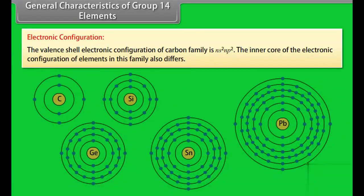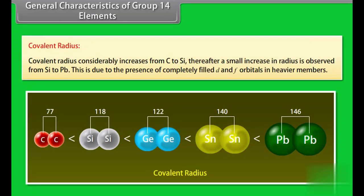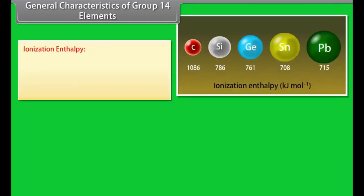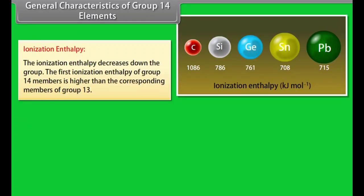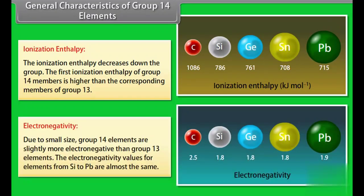General characteristics of group 14 elements. Electronic configuration: the valency shell electronic configuration of carbon family is NS2NP2. The inner core of the electronic configuration of elements in this family also differs. Covalent radius: covalent radius considerably increases from carbon to silicon. Thereafter, a small increase in radius is observed from silicon to lead. This is due to the presence of completely filled D and F orbitals in heavier members. Ionization enthalpy: the ionization enthalpy decreases down the group. The first ionization enthalpy of group 14 members is higher than the corresponding members of group 13. Electronegativity: due to small size, group 14 elements are slightly more electronegative than group 13 elements. The electronegativity values for elements silicon to lead are almost the same.